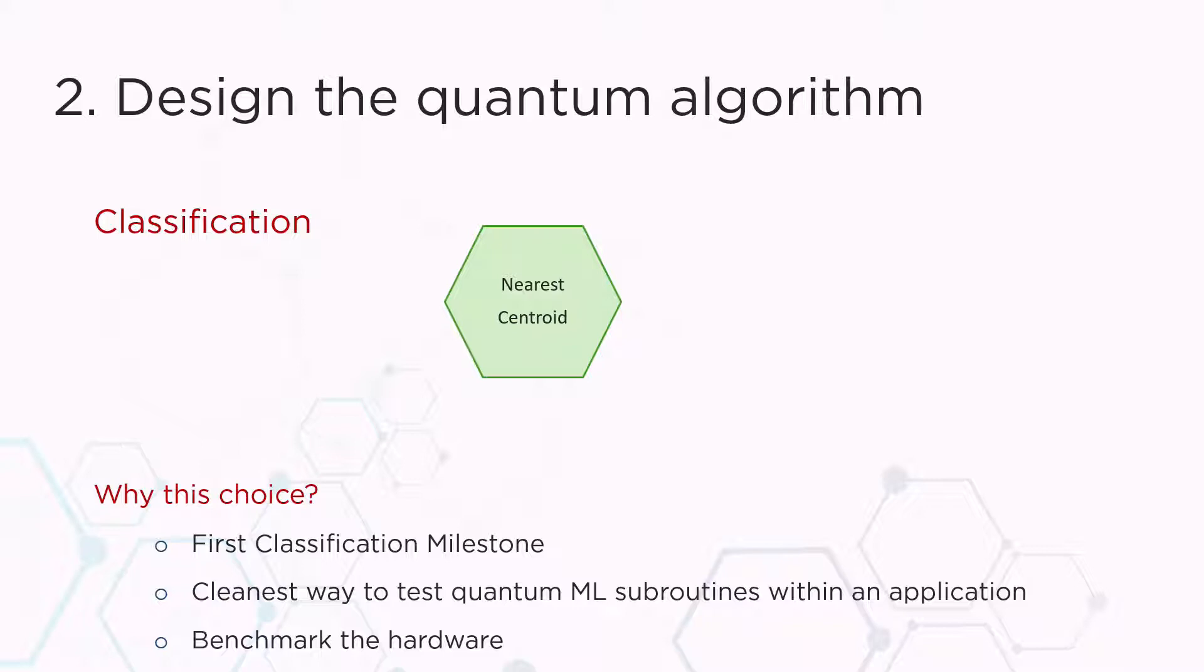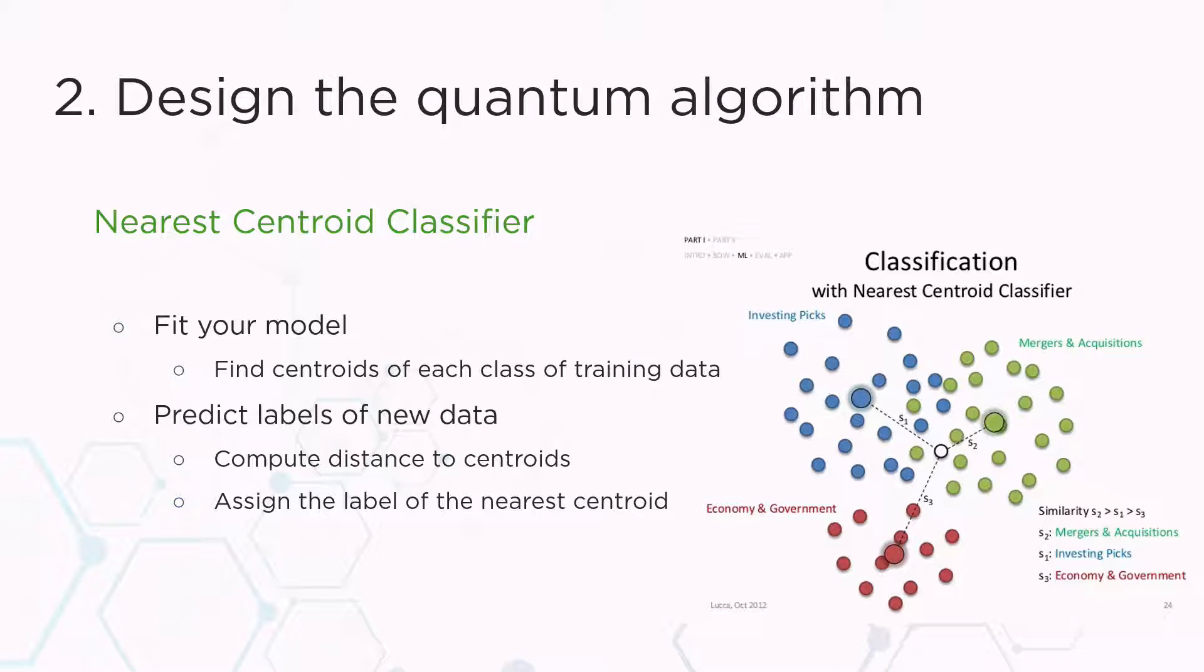From all these different algorithms, we had to pick one, and we picked the nearest centroid. There are quite a few reasons for that. It is not the best classifier out there, but it's a first classification milestone. It's also the cleanest way to test quantum machine learning subroutines within an application, and it's actually a very good way to benchmark the quantum hardware.